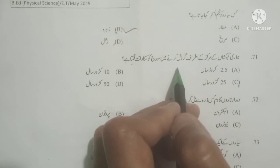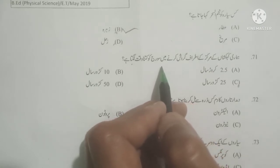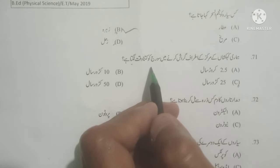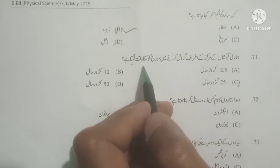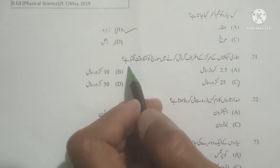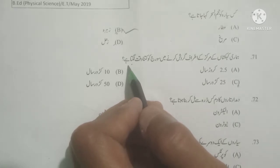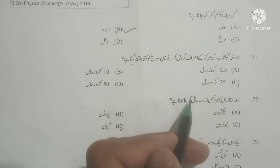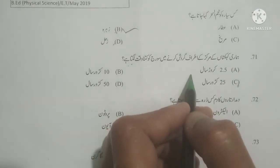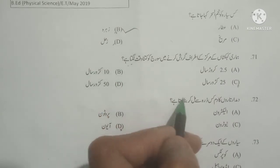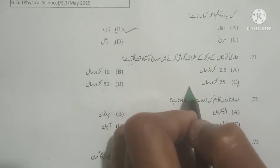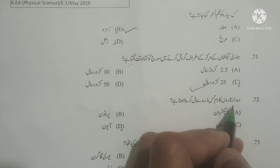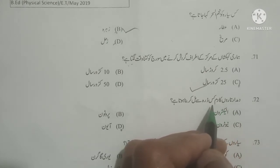Next question: How long does it take for the sun to revolve around the center of our galaxy? As you know, the time taken to revolve around the center of our galaxy is 25 crore years. Options given: 2.5 crore saal, 10 crore saal, 25 crore saal — 25 crore years is correct.